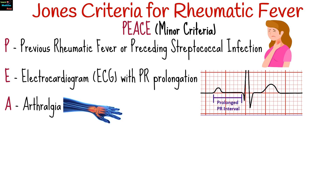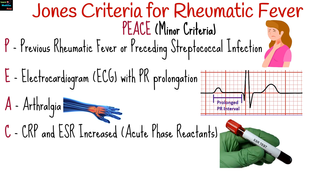A is for arthralgia, which is joint pain without actual arthritis, or pain in the joints without the objective signs of inflammation. C is for increased CRP and ESR — elevated acute phase reactants such as C-reactive protein and erythrocyte sedimentation rate, indicating inflammation.